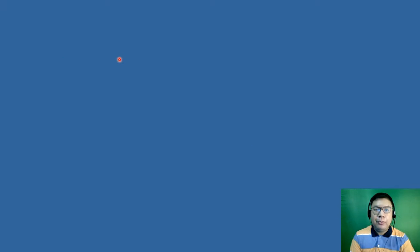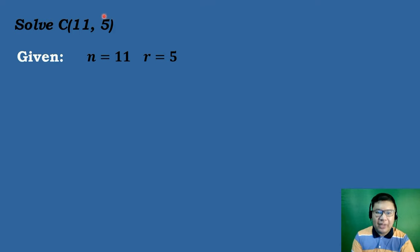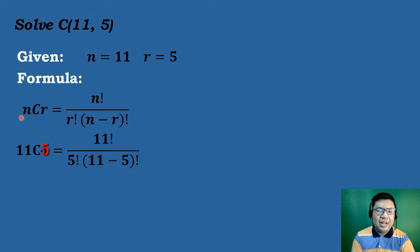Let's have our second example: solve the combination of 11 objects taken 5 at a time. We identify the given — the value of n will be equal to 11, and the value of r will be equal to 5. After that, we will use the formula of combination: nCr equals n factorial over r factorial times the quantity n minus r factorial. We substitute the corresponding values, so n equals 11, r equals 5.